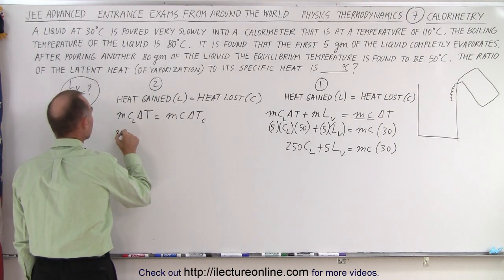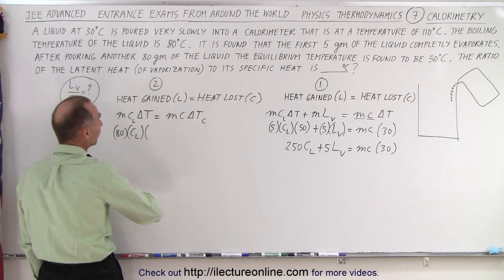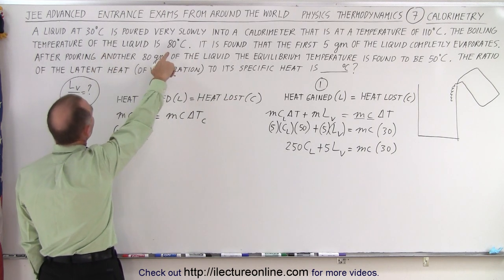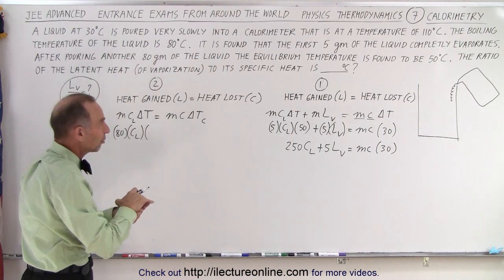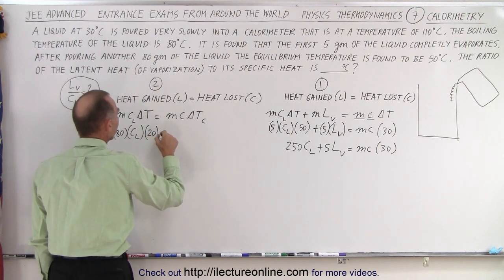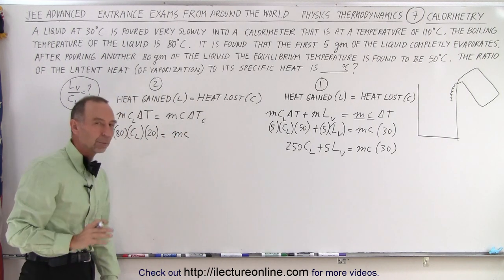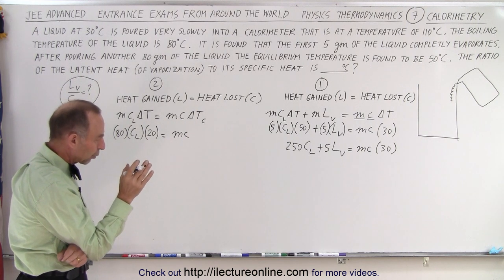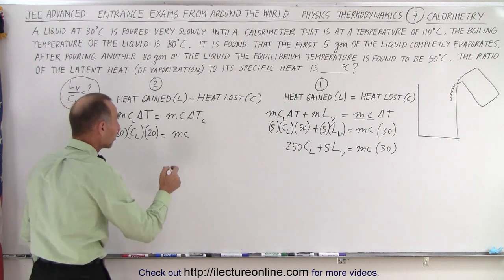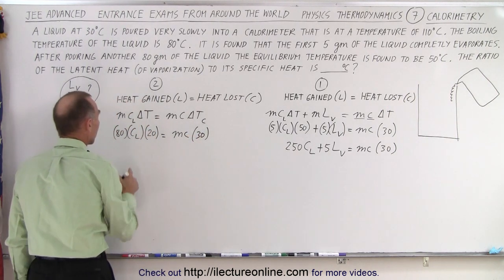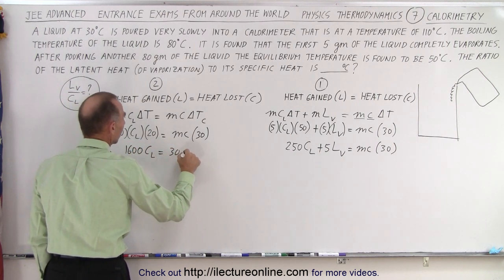The mass is now 80. C is what we are trying to find. Delta T, we go from 30 degrees, the initial temperature of the liquid was 30 and it goes up to final heat 50, right, because that's the final situation is at 50, so that's 20, is equal to MC. Again, we don't know what that is, times delta T of the calorimeter. Notice the delta T of the calorimeter goes from 80 down to 50. That's a 30 degree change. We want that to be a positive value, so positive 30. Now multiplying this out, we get 1600CL equals 30MC.